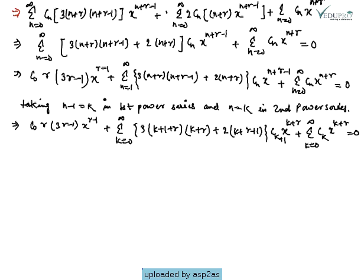Simplifying and taking common terms, we obtain: summation from n=0 to infinity of [3(n+r)(n+r-1) + 2(n+r)] · c_n · x^(n+r-1) plus summation from n=0 to infinity of c_n · x^(n+r) = 0. We now have two power series and combine them using the standard process for adding power series.